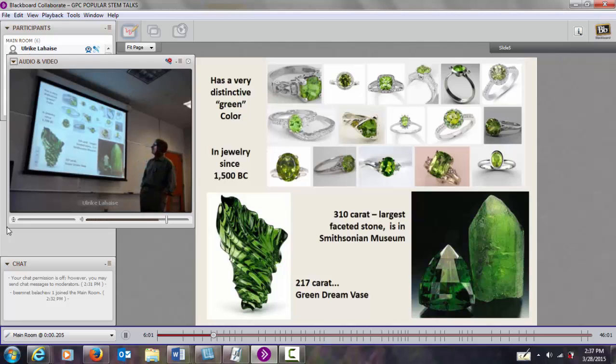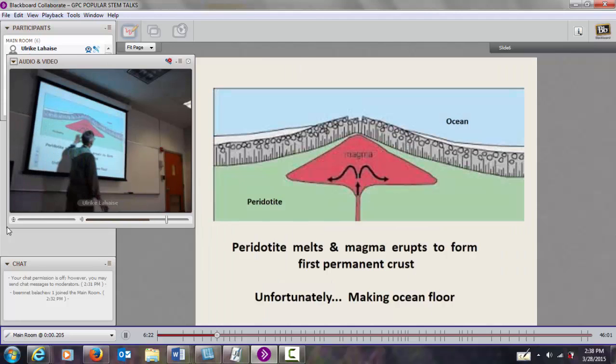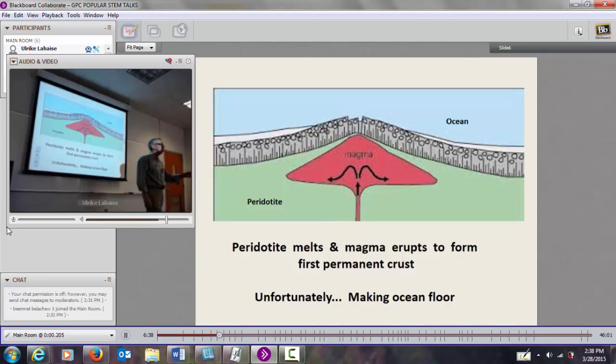Here are some examples of peridotite. It has a very distinctive green color. If you're an August birthstone, you can walk into a store and recognize it. It's been in jewelry since 1,500 B.C. The largest peridot-faceted gemstone is 310 carats in the Smithsonian. Now, the green of the peridot. The thing that makes the earth happen first is that I begin to partly melt this, and as it melts, it makes a magma.